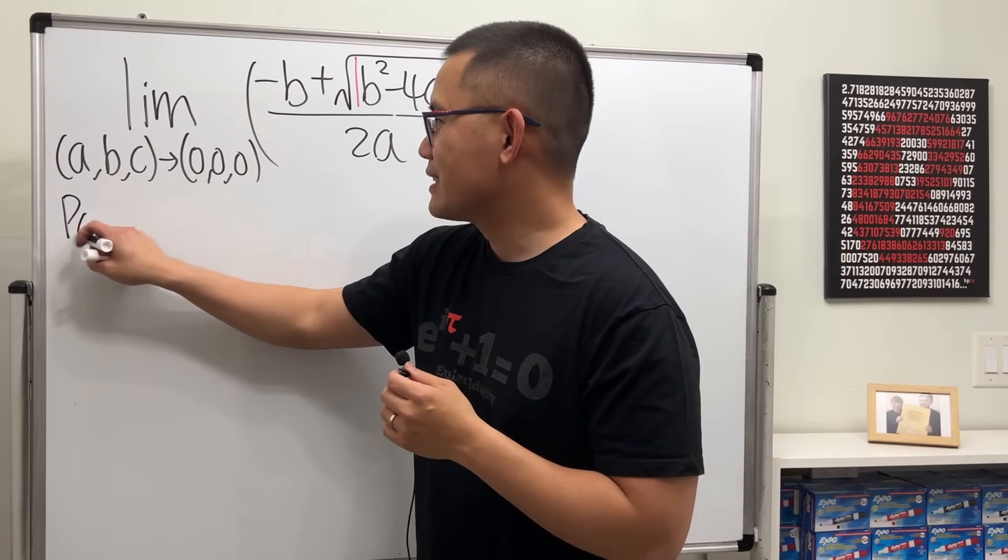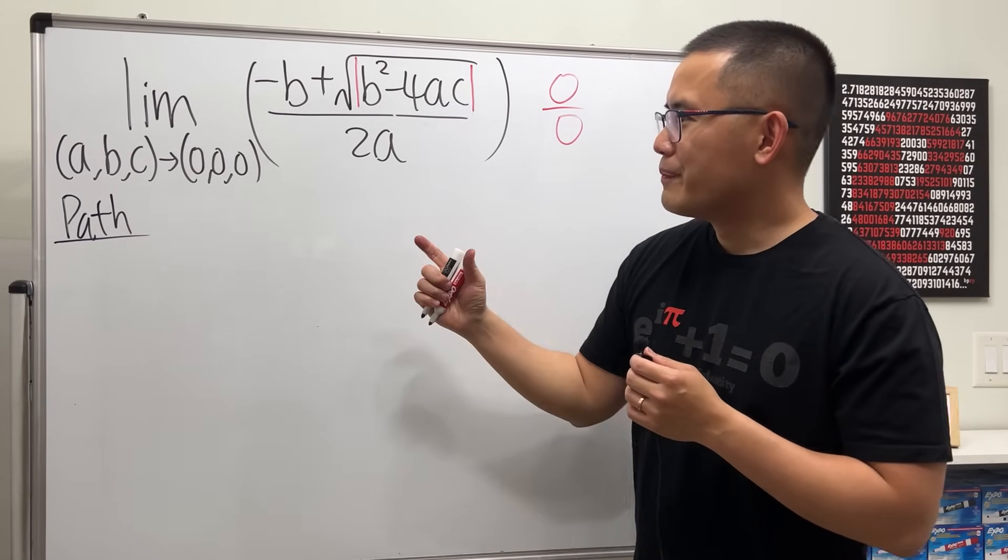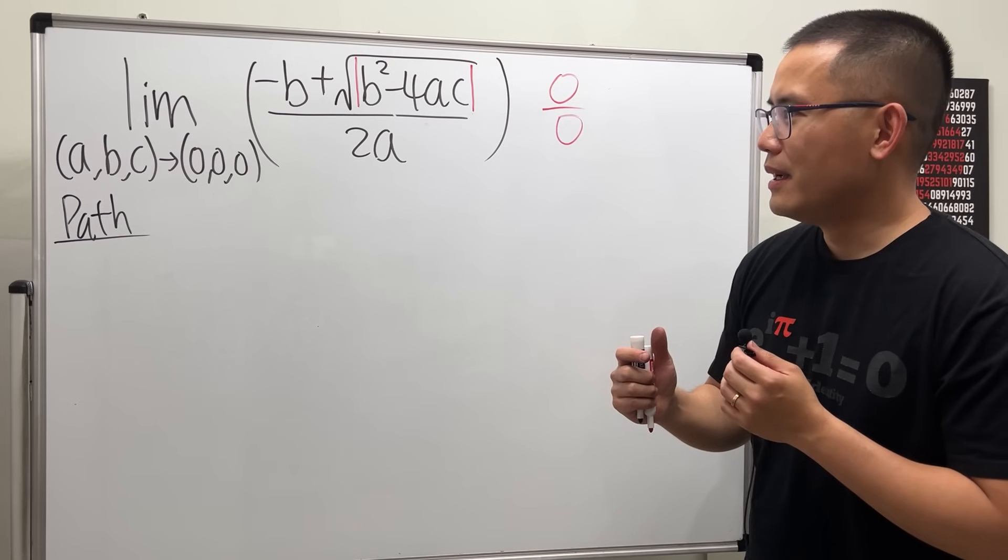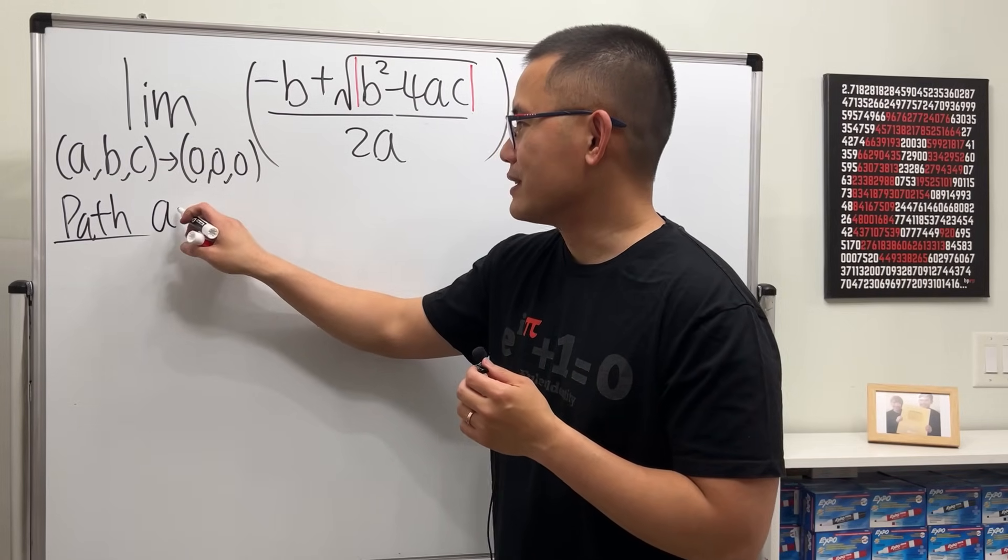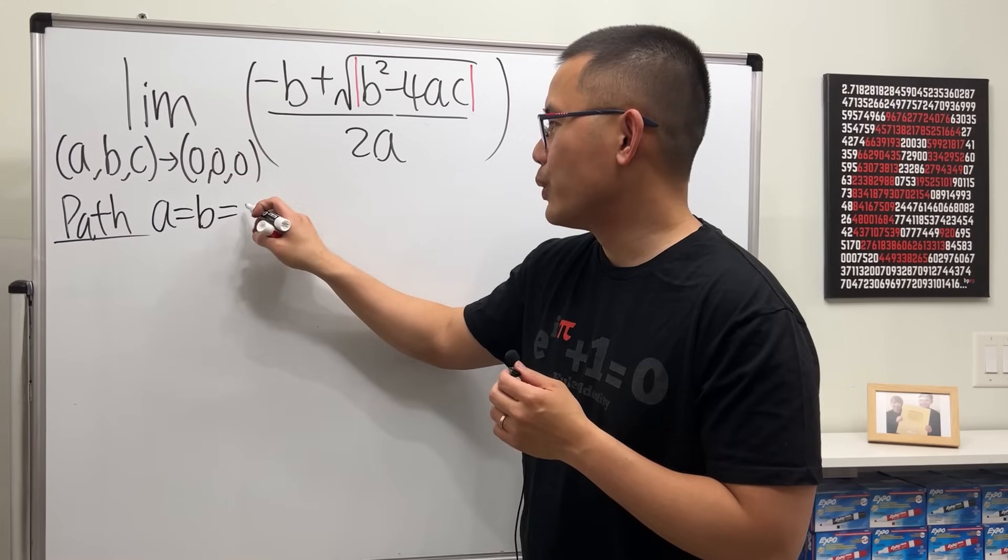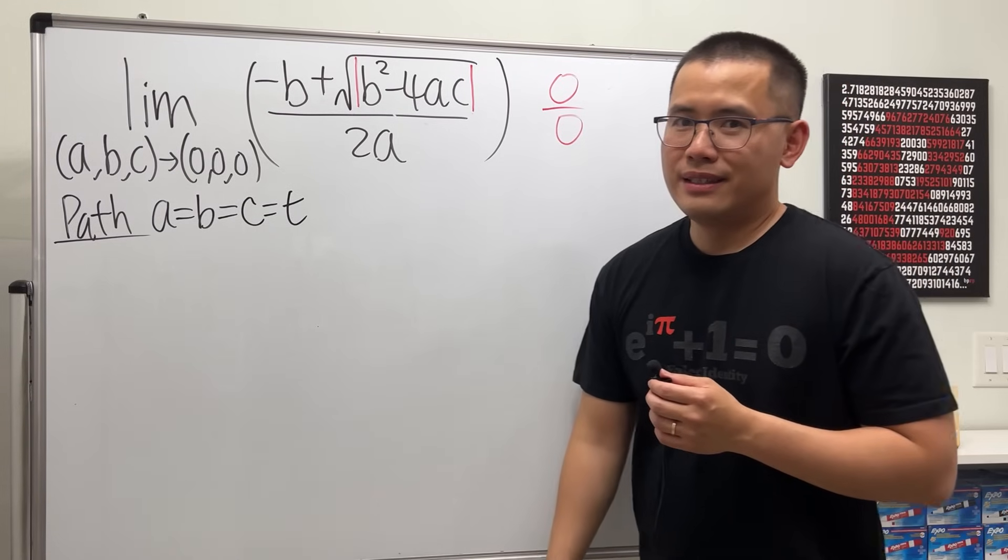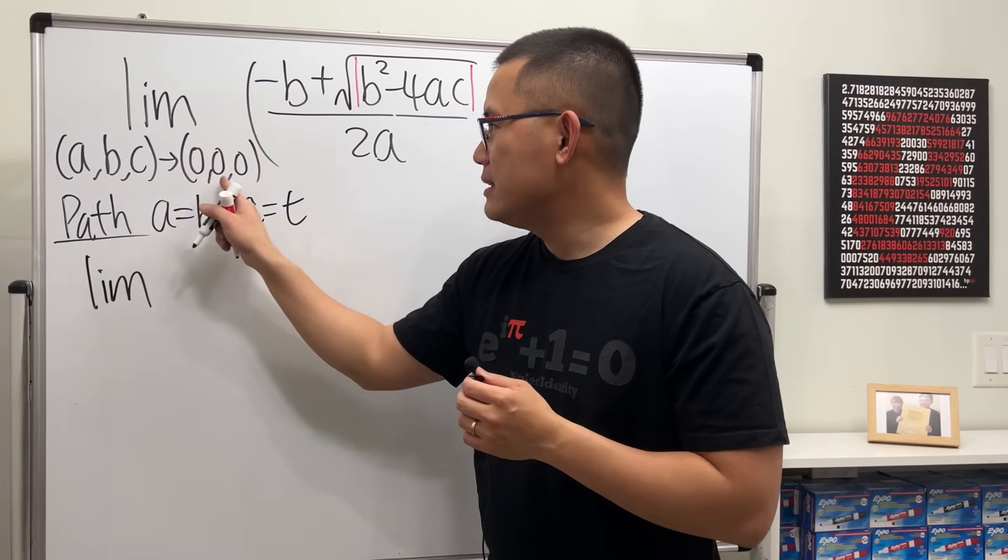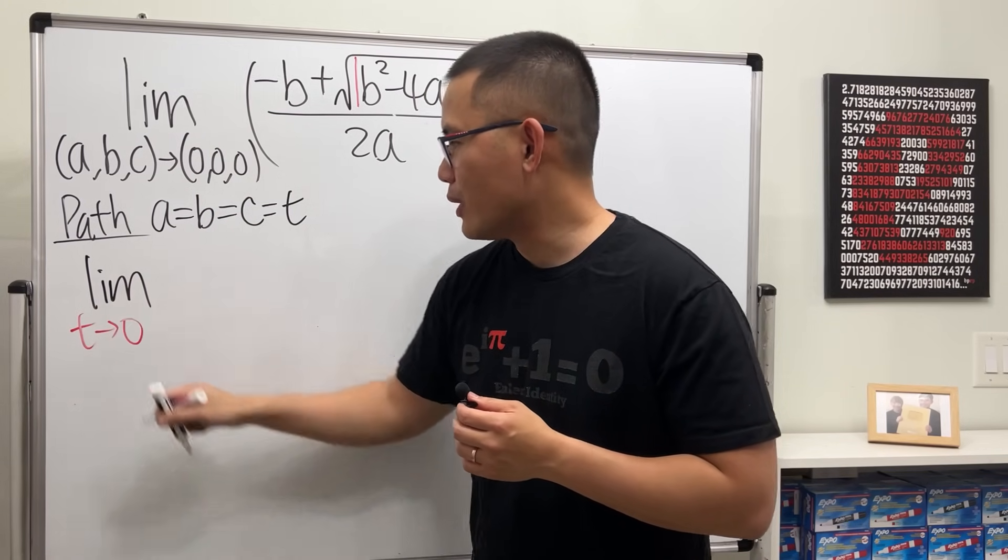All right, so let's go ahead and do that. So here we go, let's find our first path. And we have three variables, so it might be easier to find a parametric curve, right? I'm just going to do an easy one first. Let's say a is equal to b, it's equal to c, it's equal to t.